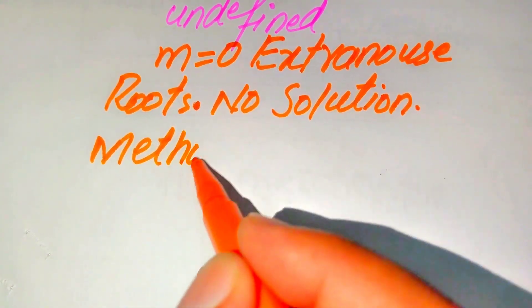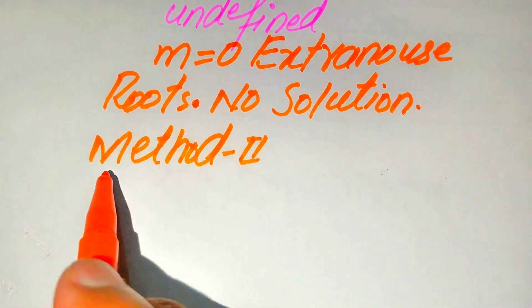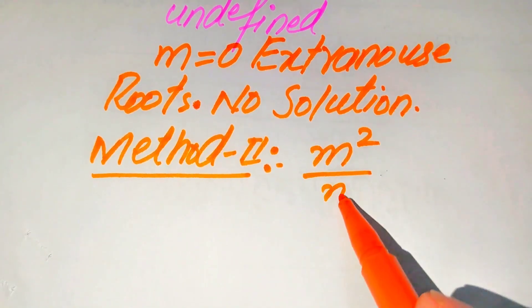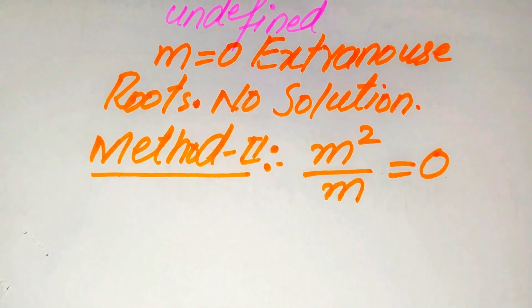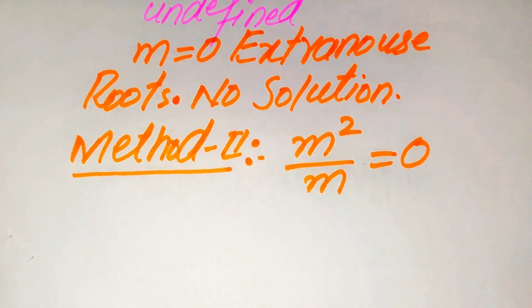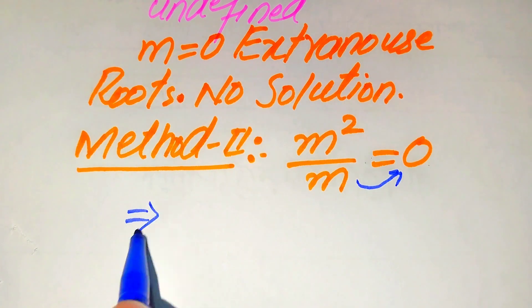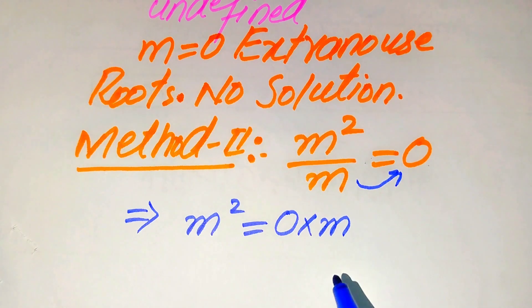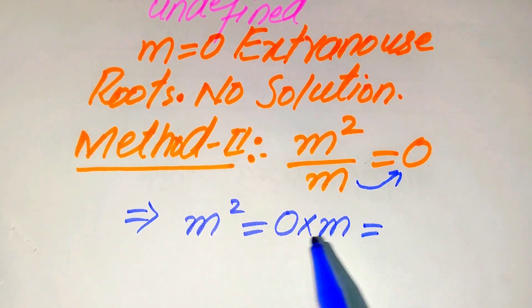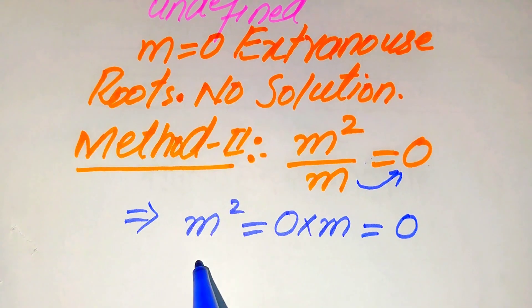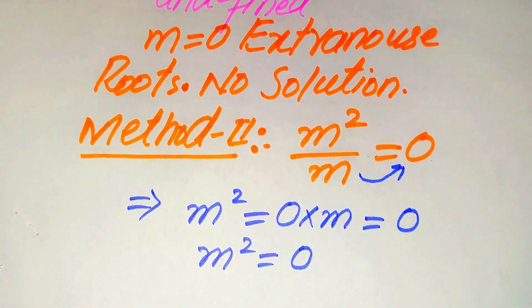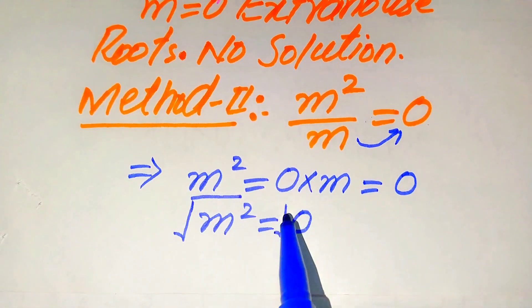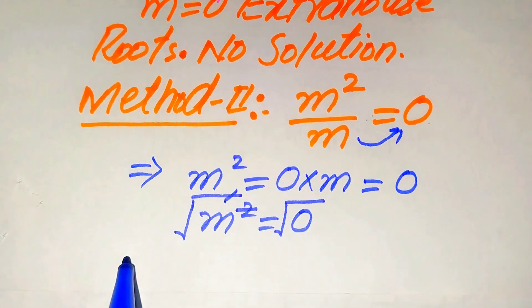We now solve this problem using the second method. If we have m squared divided by m equals 0, we move m to the right-hand side, giving m squared equals 0 times m. Since 0 times any number equals 0, we get m squared equals 0. To find m, we take the square root on both sides, and the square root and square cancel, giving m equals 0.